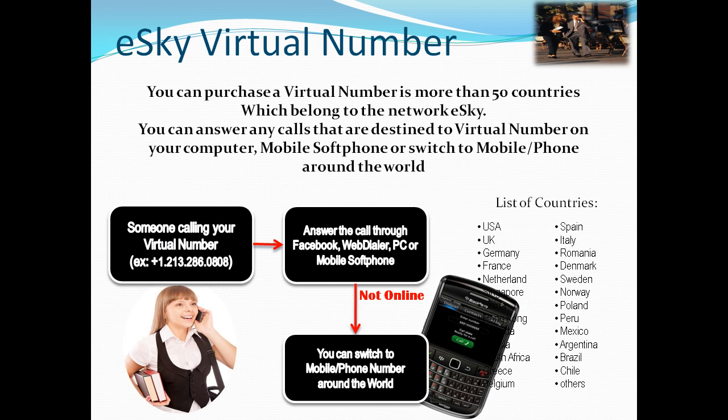eSky Virtual Number: eSky provides virtual phone numbers for up to 60 countries that can ring to your ENUM. You can have an international presence in China, Vietnam, Japan, Hong Kong, UK, Australia, and many more. Local people can dial your local virtual number and it rings to your ENUM. All incoming calls are 100% free.